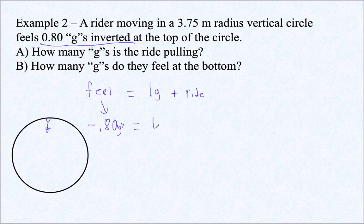And then that's going to be 1g plus the ride. Okay, we're trying to solve for the ride, and so we get the ride is equal to 1g plus 0.8, is 1.8g's. So the ride must be pulling 1.8g's.